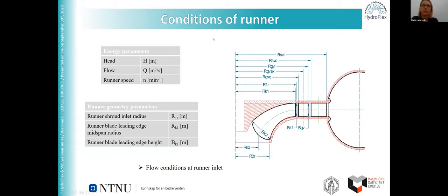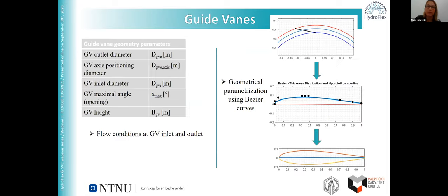The developed code in MATLAB takes into account the conditions in front of the runner — that is, the operating conditions: head, flow rate, and runner rotational speed at the best efficiency point. It also takes into account the geometry parameters for the runner at the inlet. This was needed to obtain the flow conditions at the runner inlet — specifically the velocity triangles — because the circulation in front of the runner is preserved in the vaneless space. We can then use these flow conditions to obtain the geometrical parameters of the guide vanes and the flow conditions at the guide vane inlet and outlet.